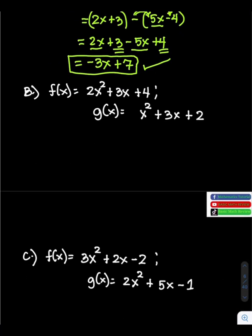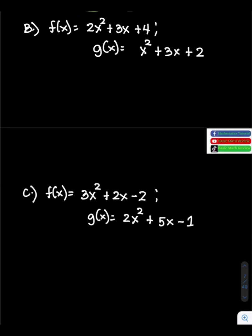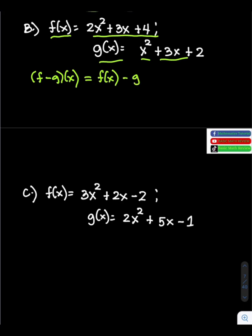Next, example number 2. We have f of x equals 2x squared plus 3x plus 4 and g of x equals x squared plus 3x plus 2. Find the difference: f minus g times x equals f of x minus g of x.